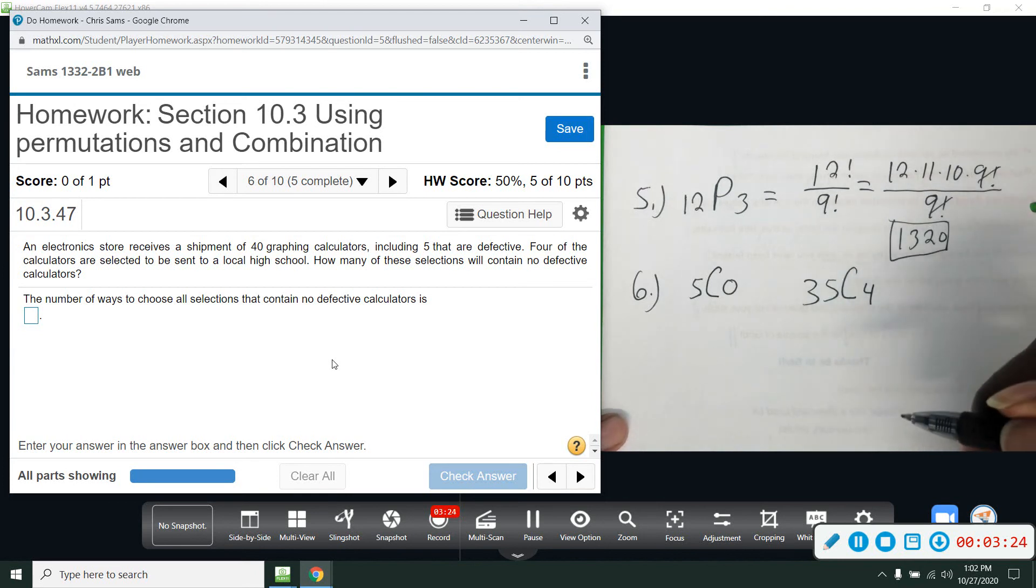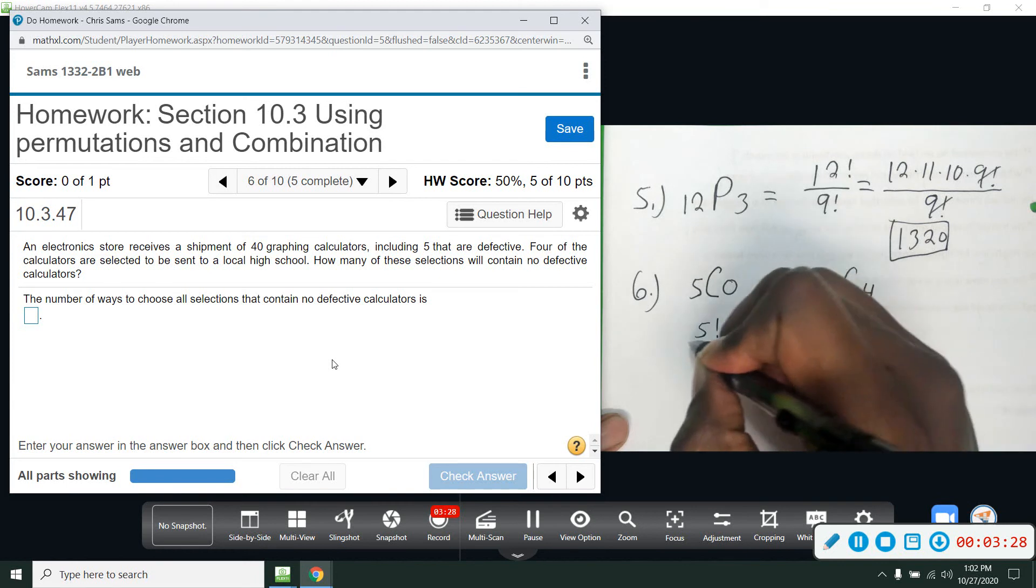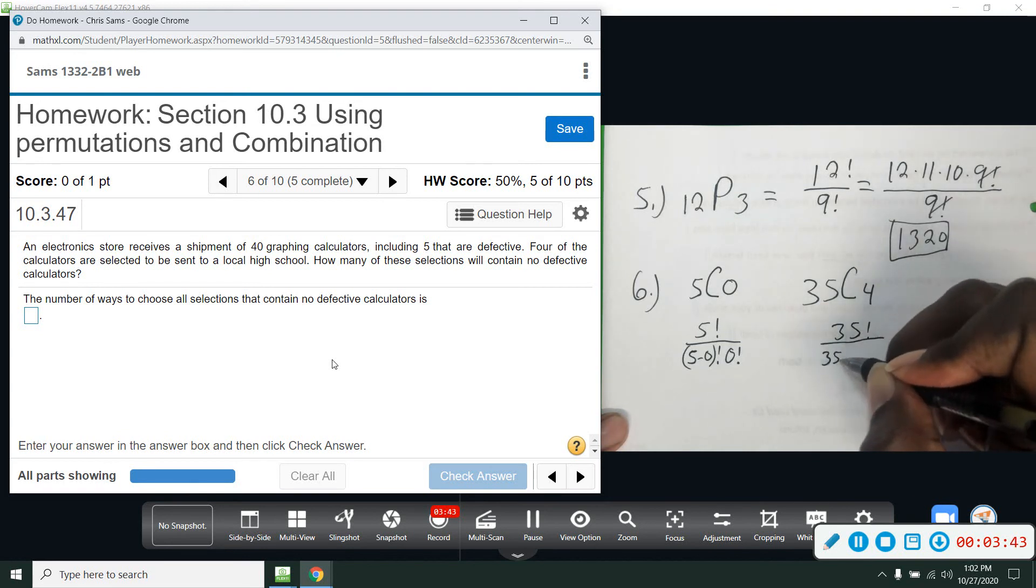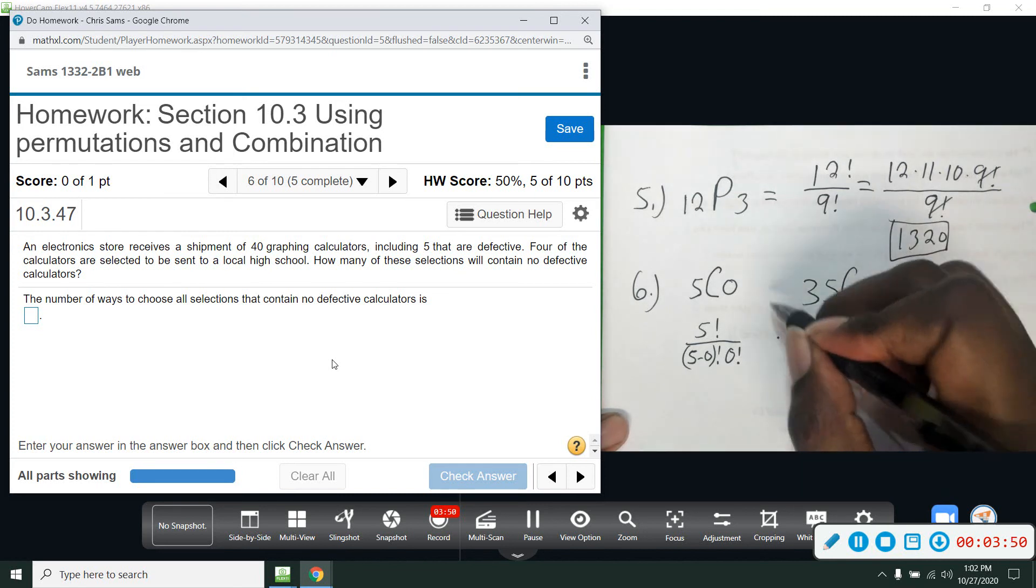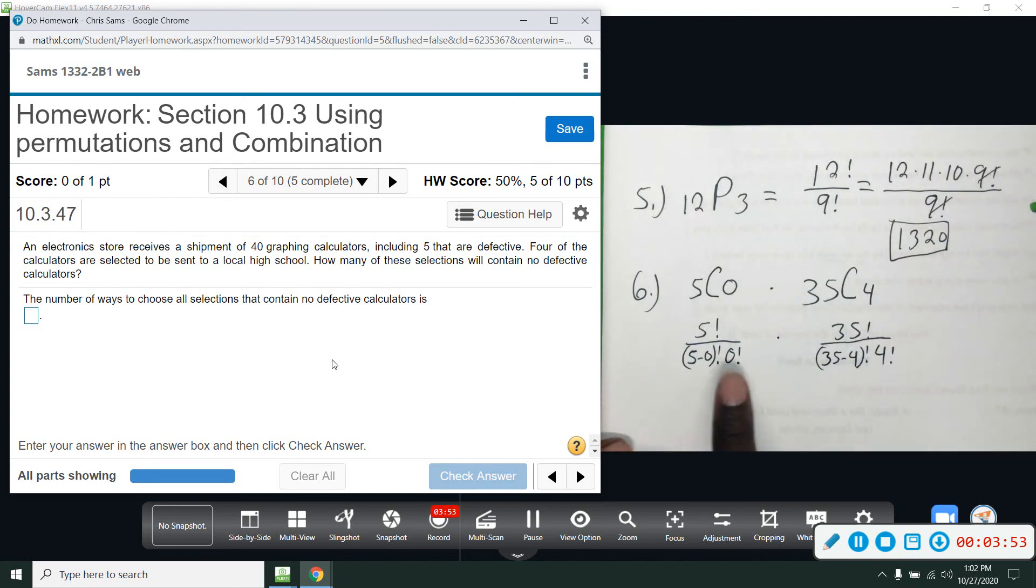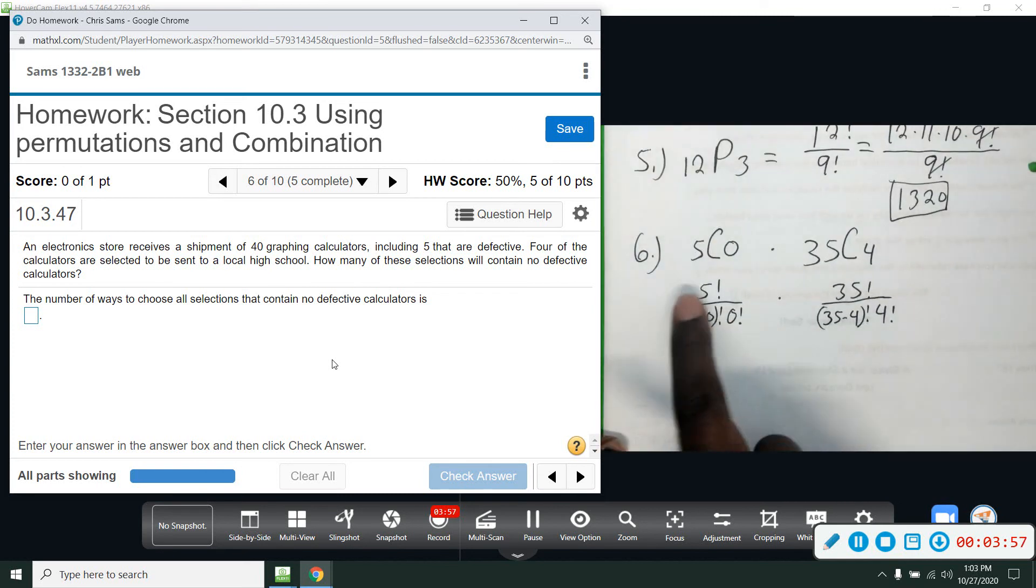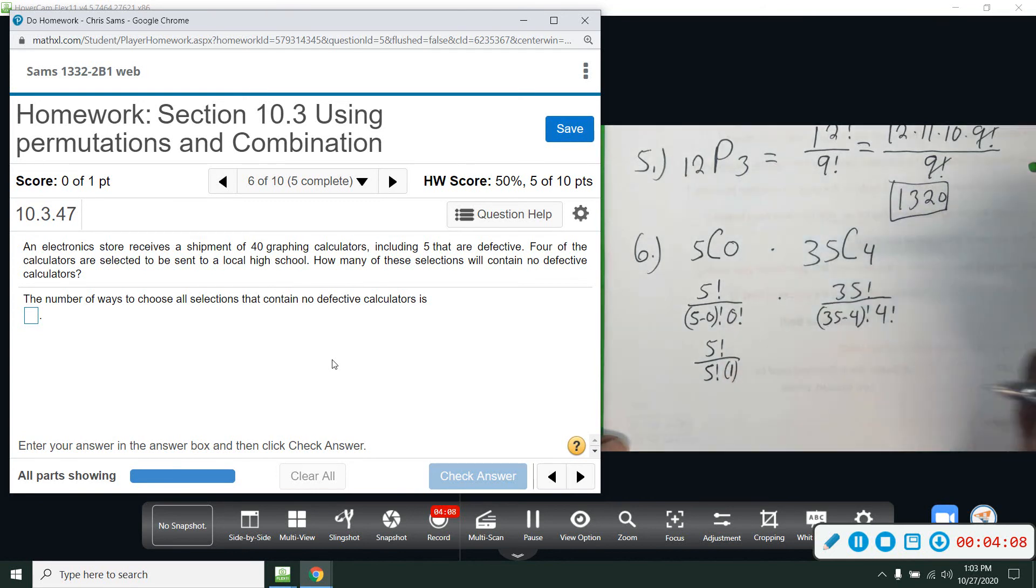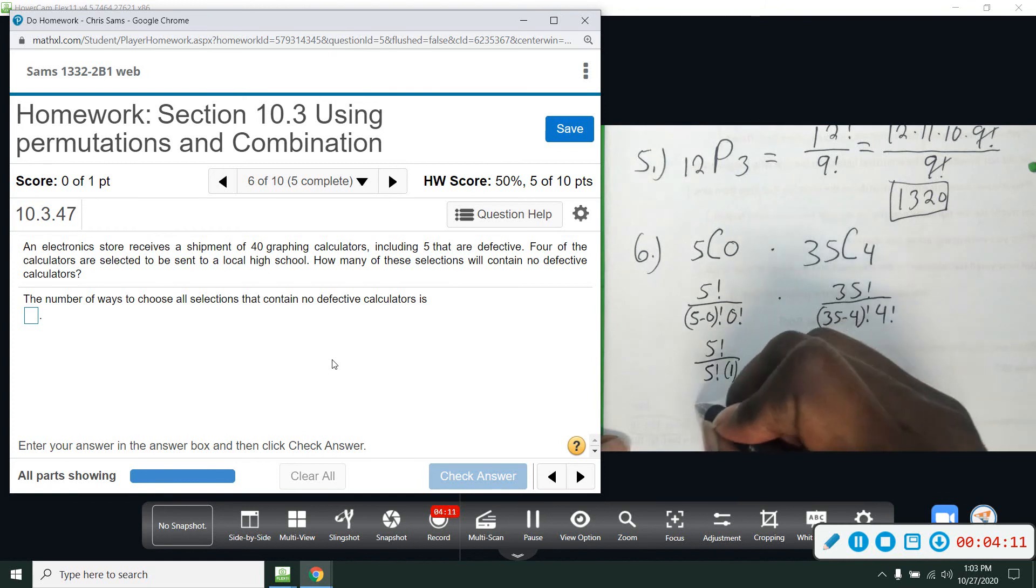All right, so we'll do these two calculations. Five factorial over five minus zero factorial times zero factorial. And then over here we have 35 factorial over 35 minus four factorial times four factorial. And we're going to multiply these two together at the end. Now, the fact is zero factorial is one. And so we have five factorial divided by five factorial times one. And so you just end up with five factorial over five factorial, which is also equal to one. This divides itself out. So we just end up with one here.